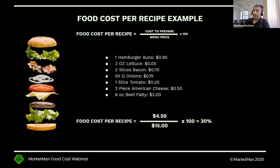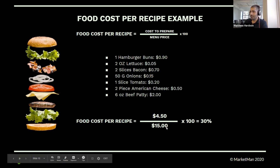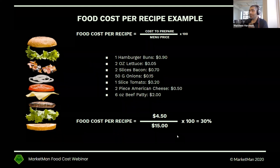Here's an example. We've talked about that burger — all in all, it costs us $4.50 to produce that item. We sell it on the menu for $15. Speaking from our office in Midtown Manhattan, New York City — that's where you'll find these egregiously priced $15 burgers. But all in all, that's going to give you a 30% food cost percentage.